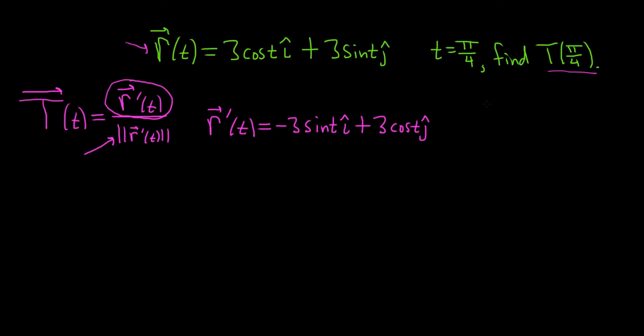At this point, we can go ahead and plug in pi over 4 if we like, or we can wait until later. I don't think it matters too much. Let's go ahead and plug it in. The reason we can plug it in is because we're pretty much done. We have our prime, we don't need to differentiate anymore. We're done taking derivatives, so we can plug in the number.